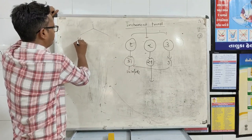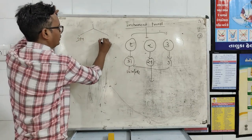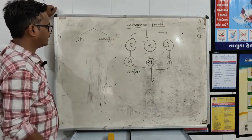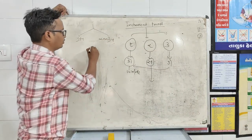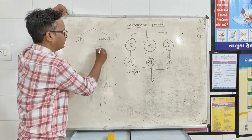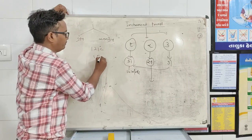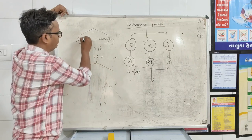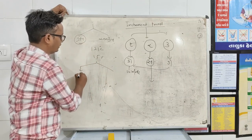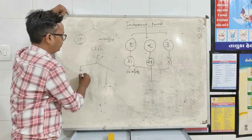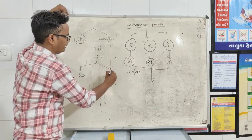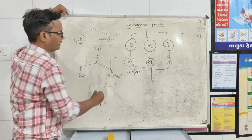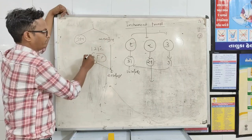The instrument is either wrapped or unwrapped. When it is wrapped, the autoclave is at 121 degrees Celsius, at 15 psi pressure. The wrapped instrument requires 30 minutes and the unwrapped instrument requires 20 minutes in the autoclave.